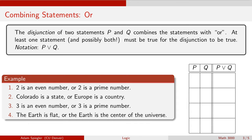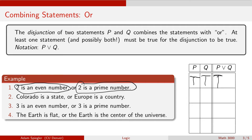The first statement is: two is an even number OR two is a prime number. The statement 'two is an even number' is true, and 'two is a prime number' is also true. Since at least one of them is true, overall P OR Q is true. So statement one is a true statement.